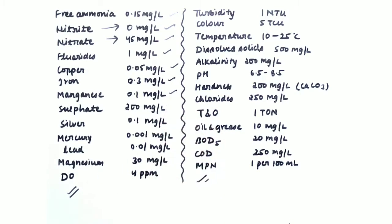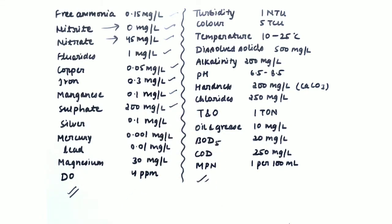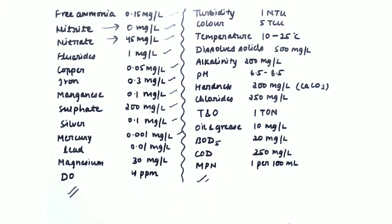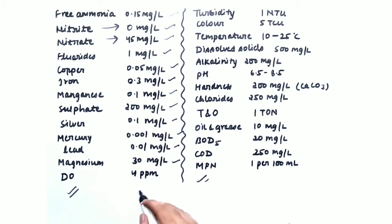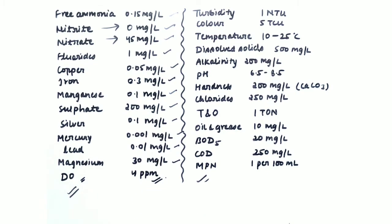Manganese has a permissible limit of 0.1 mg per liter. Sulphates are 200 mg per liter. Silver, which is harmful, is 0.1 mg per liter. Mercury, which is very harmful, is 0.001 mg per liter. Lead, also very harmful, is 0.01 mg per liter. Magnesium is 30 mg per liter. Dissolved oxygen should be greater than 4 ppm so that aquatic life can thrive.